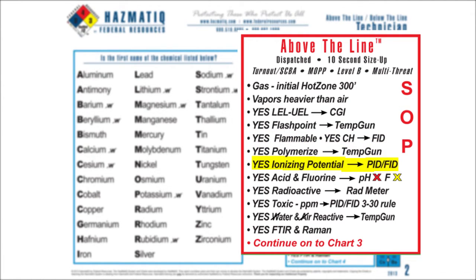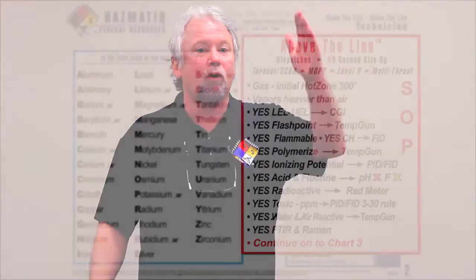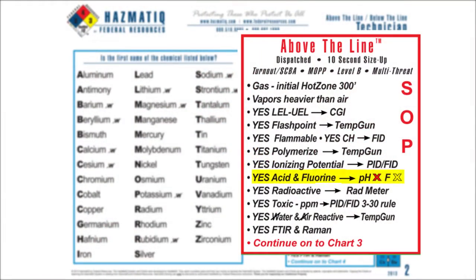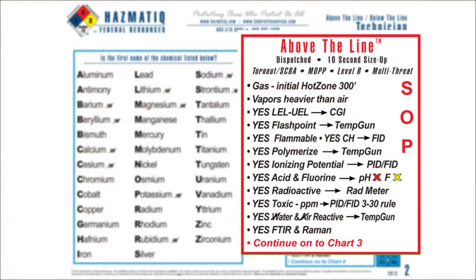That gas polymerizes. It has an ionizing potential — at this point I don't know what the IP is; I'll have to find that out in the book. The next thing I want to know: is this chemical corrosive? Is it an acid? Is it a base? We always start above the line that it's an acid with fluorine. Next, is this chemical toxic or radioactive? I look at the IDLH. It's toxic in parts per million. It's radioactive until proven different. And it also reacts with water and air.